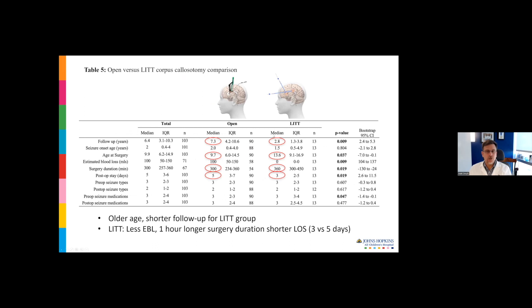Comparing all patients open versus all patients lit: shorter follow-up because we've been doing those for a shorter period, they tended to be older patients. Surgery duration is one hour longer to do the laser ablation on average. The post-op stay is two days shorter—the median discharge was about three days versus open surgeries about five days. But overall, the lit patients do stay a shorter period of time.